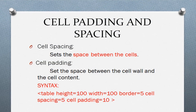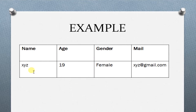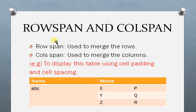Now we will see some more attributes of the table: cell padding, cell spacing, rowspan, and colspan. Cell spacing sets the space between the cells. Similarly, cell padding sets the space between the cell wall and the cell content. I have given the syntax for cell spacing and cell padding here. Rowspan is used to merge rows and colspan is used to merge columns.